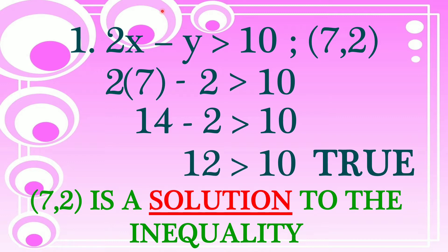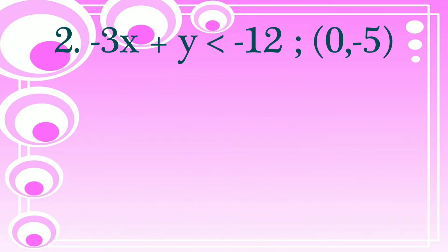It's that simple to determine if an ordered pair is a solution of our inequality — we just substitute it into our variables x and y. Let's try again. Number 2: we have negative 3x plus y is less than negative 12, and our ordered pair is (0, negative 5). If it results in true, it is a solution; if false, it is not. Our x value is 0 and our y value is negative 5. Let's substitute into our inequality.